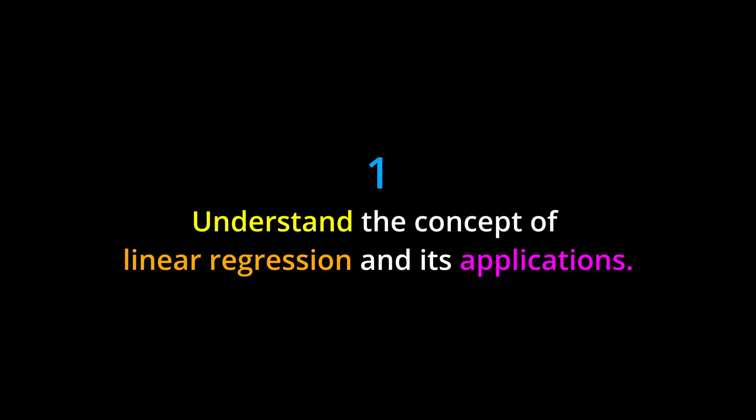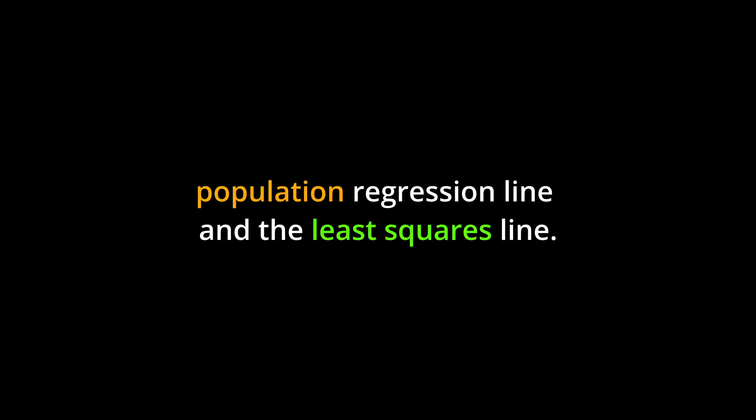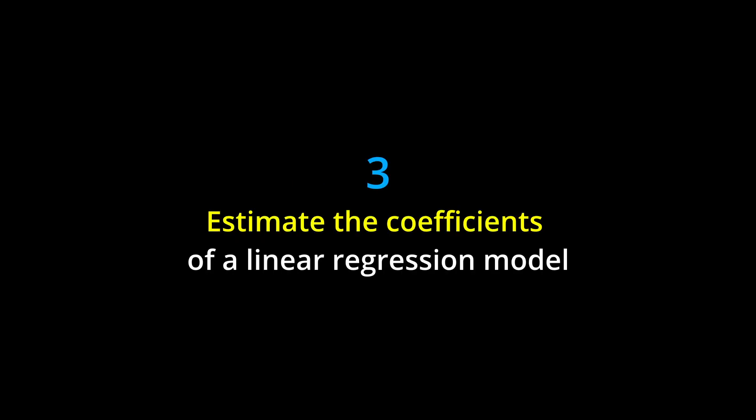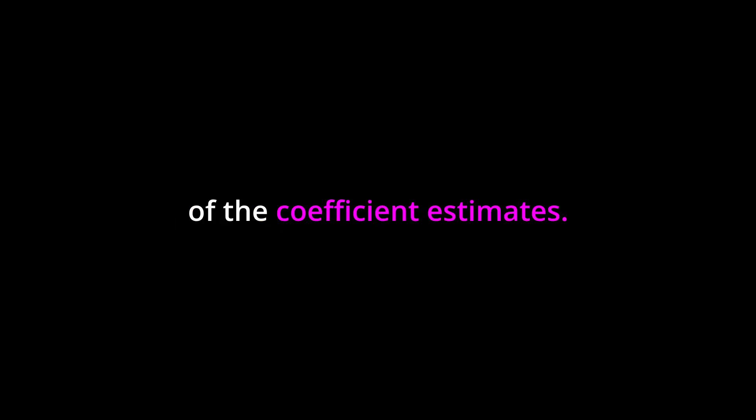Learning objectives: By the end of this chapter you should be able to: one, understand the concept of linear regression and its applications; two, explain the difference between the population regression line and the least squares line; three, estimate the coefficients of a linear regression model using the least squares approach.